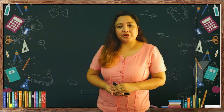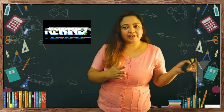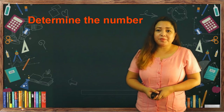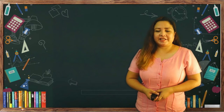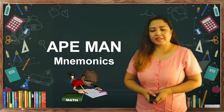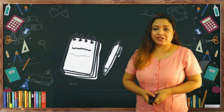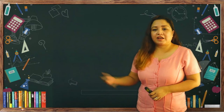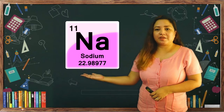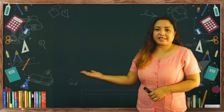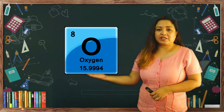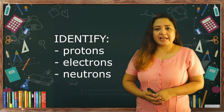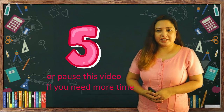Did you get it? If you are still a bit confused, just rewind this video and listen again. Now let us practice determining the number of protons, electrons, and neutrons of an atom using the APEN mnemonics. I will give you two elements to identify using your notebook and pen. First, sodium with the symbol Na, atomic number 11, and mass number 23. Second, oxygen with the symbol O, atomic number 8, and mass number 16. Please identify the number of protons, electrons, and neutrons of these two. I will give you 5 minutes. Time starts now.